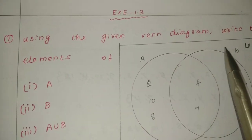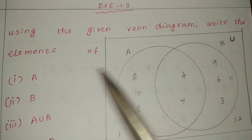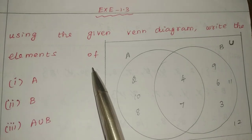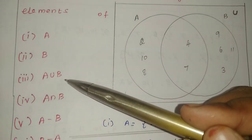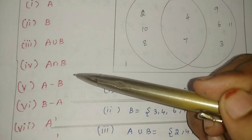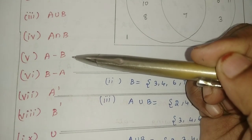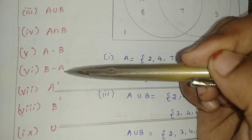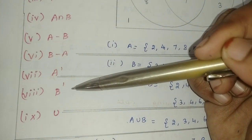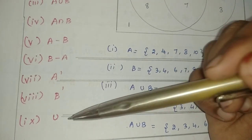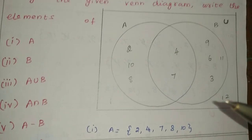Using the given Venn Diagram, write the elements of A, B, A union B, A intersection B, A difference B, B difference A, A dash, B dash, and then the universal set.